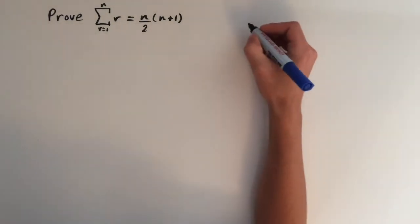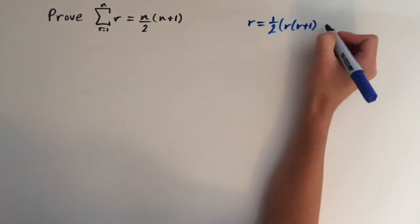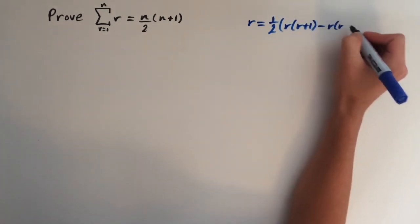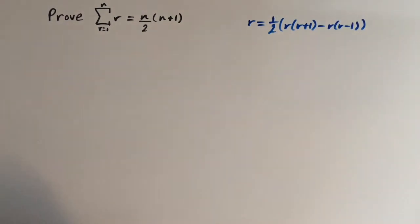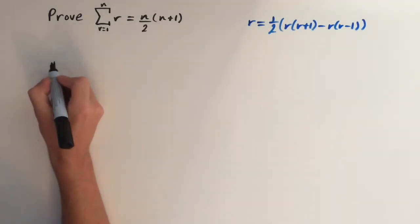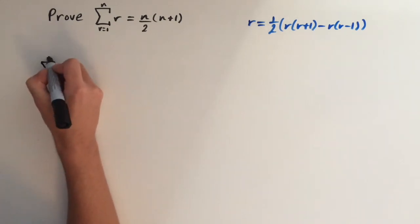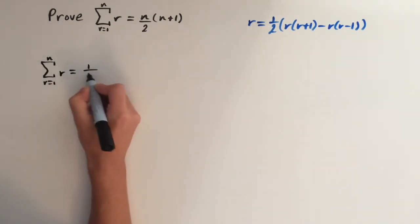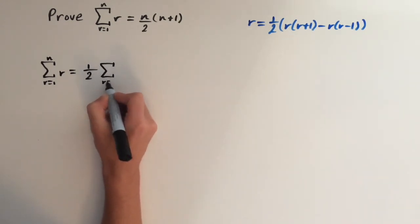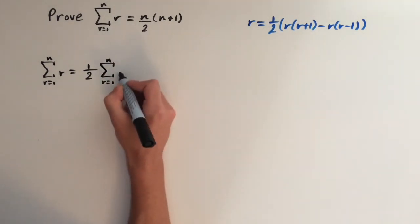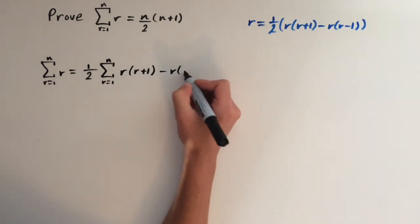What we can do is express r as one half times r times (r plus 1) minus r times (r minus 1). If we expand all these brackets out we're just going to get back to r. So now we need to sub it back in. The sum of the series from r equals 1 to n of r equals one half times the sum from r equals 1 to n of r times (r plus 1) minus r times (r minus 1).